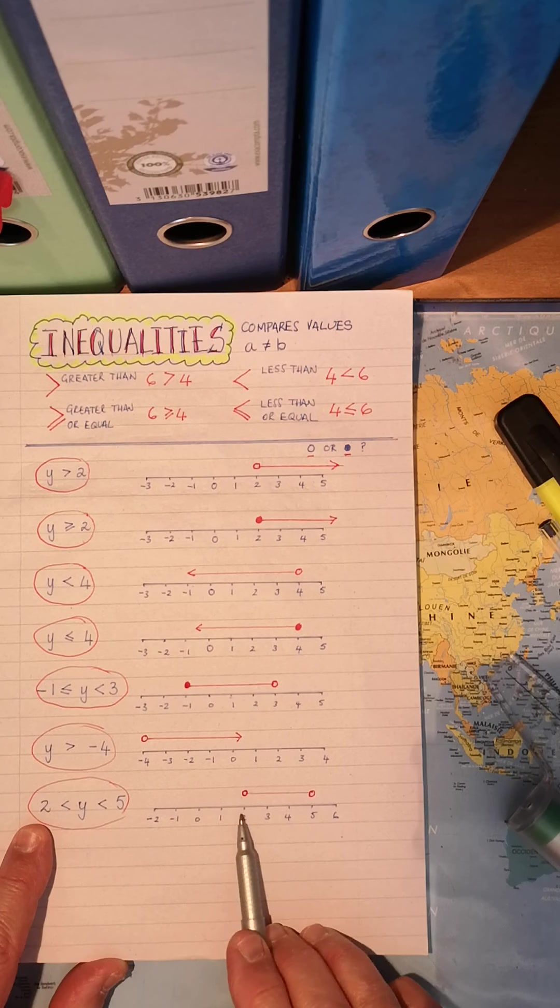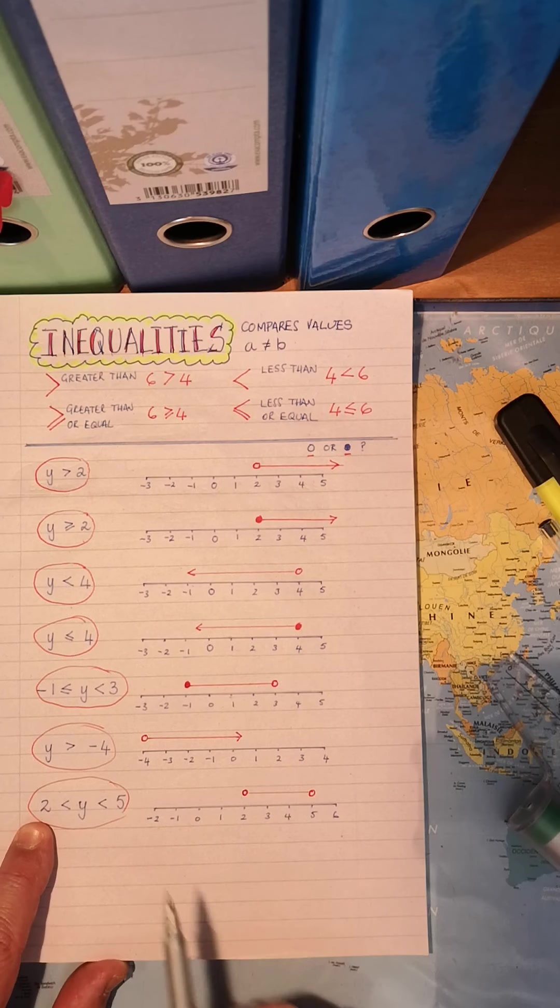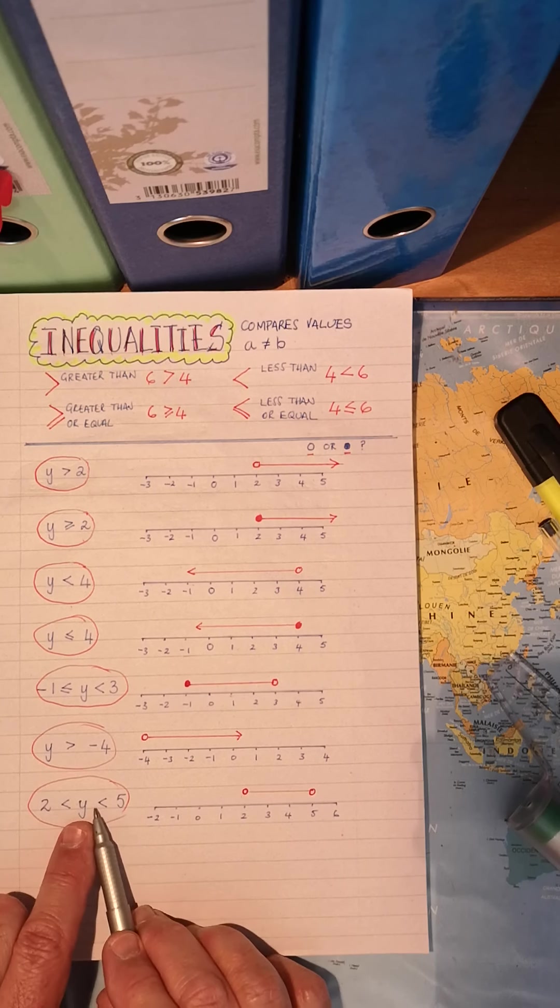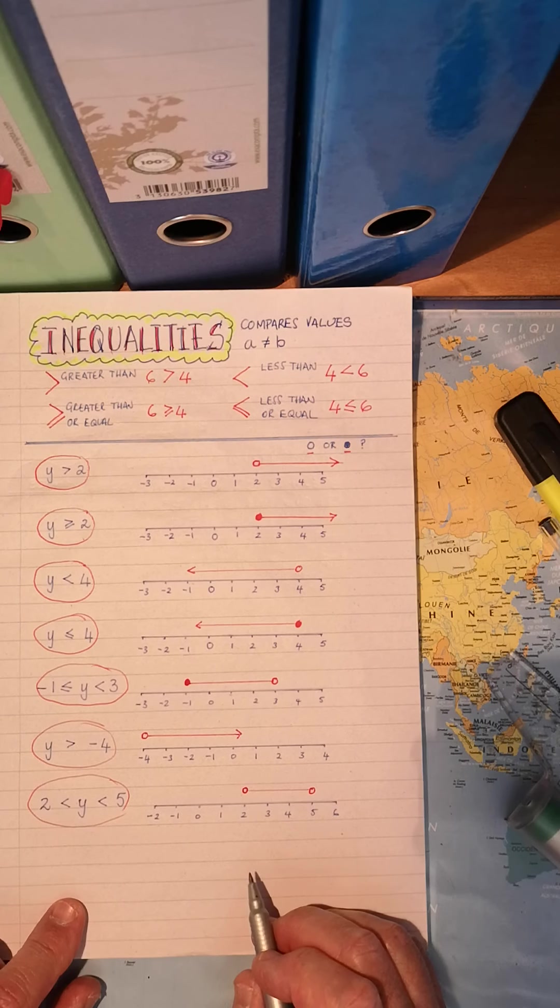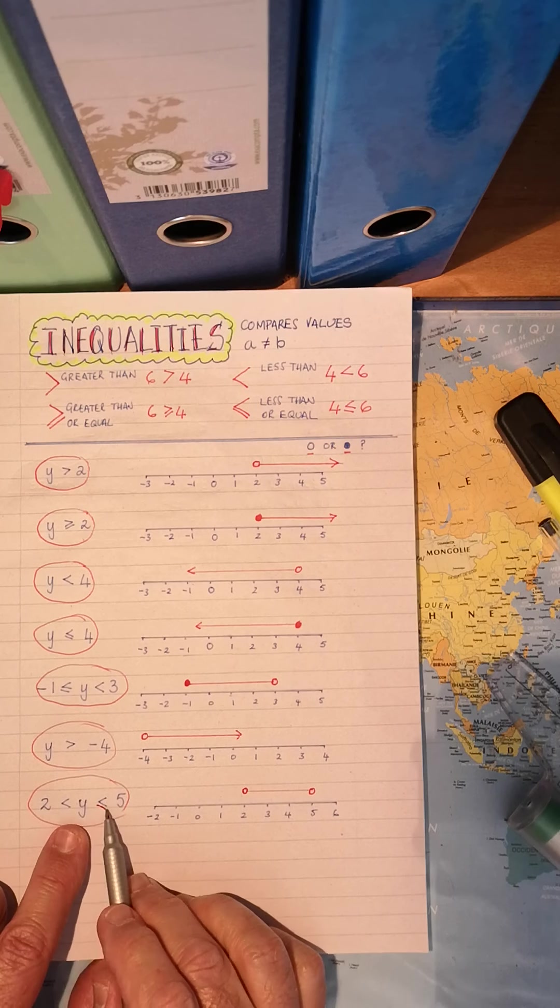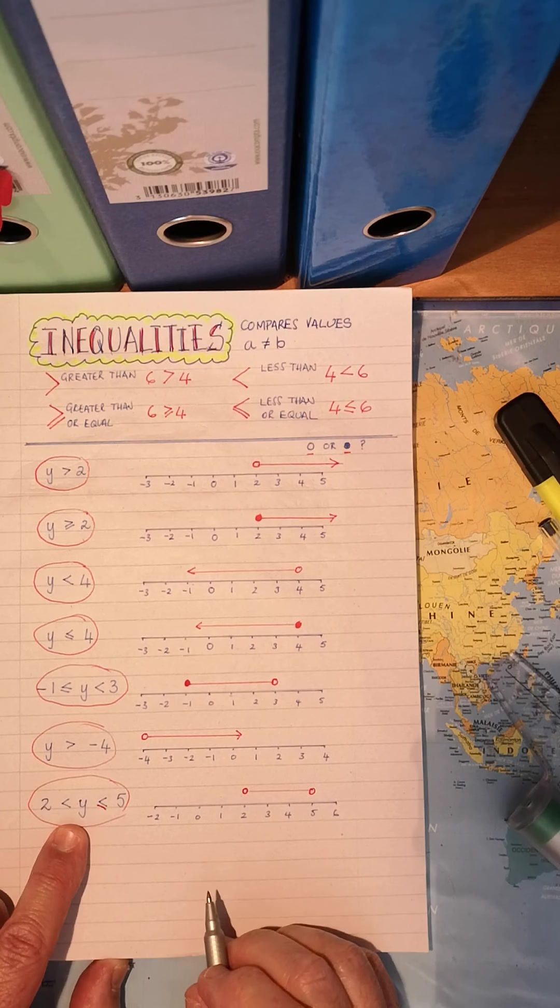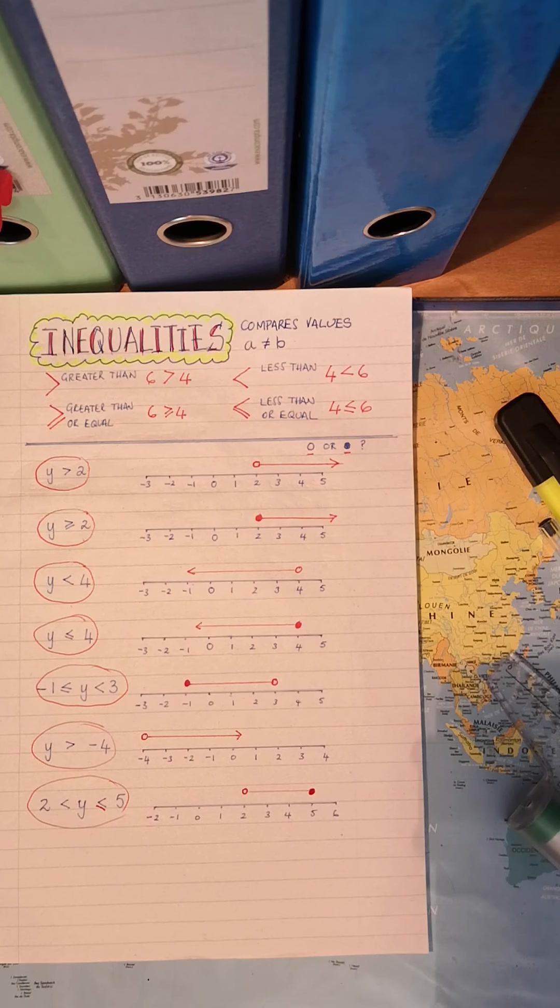Y is bigger than two. Y. There's two. Bigger than two. However, it is less than five. Open circle. If it was Y was smaller than or equal to five, we would have colored that in. OK.